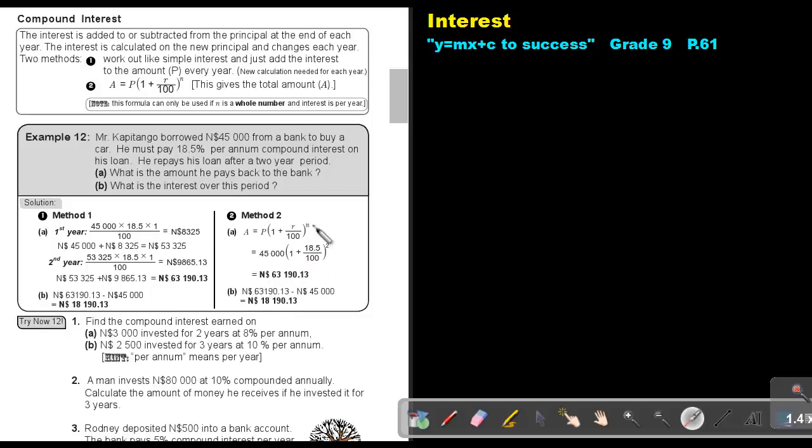The short method is using this formula. So I substitute the 45,000, there's the one, there's the rate, and that N must be a whole number. So that is two years. And then if I work it out, I'm getting the amount. And then to find the interest, I just take the amount and I subtract the original principle. And that will give me the interest.